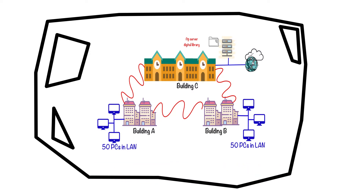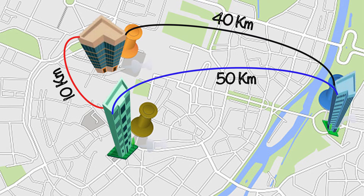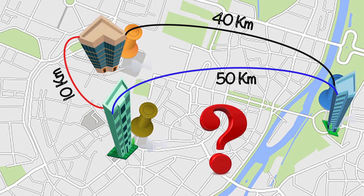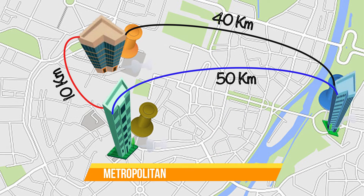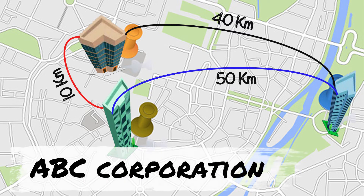But what if the buildings are not in the same geolocation? For example, the buildings are in the same city but in different geolocations, maybe 20 to 50 kilometers away. In that case, how could we form connectivity between these buildings? That is where the metropolitan area network comes in.